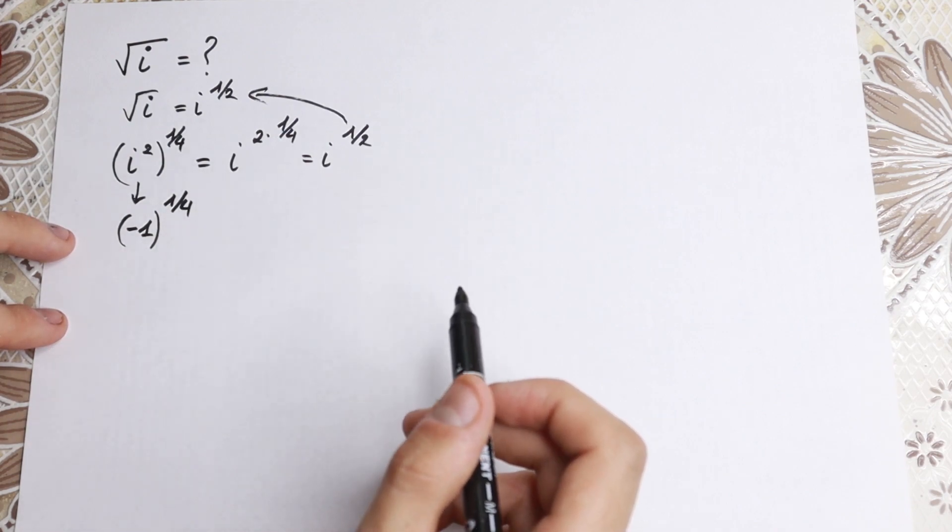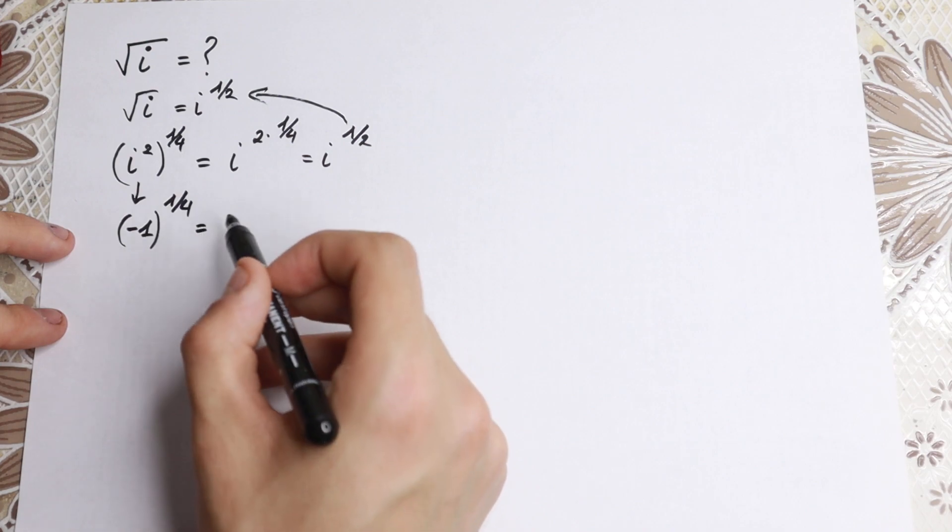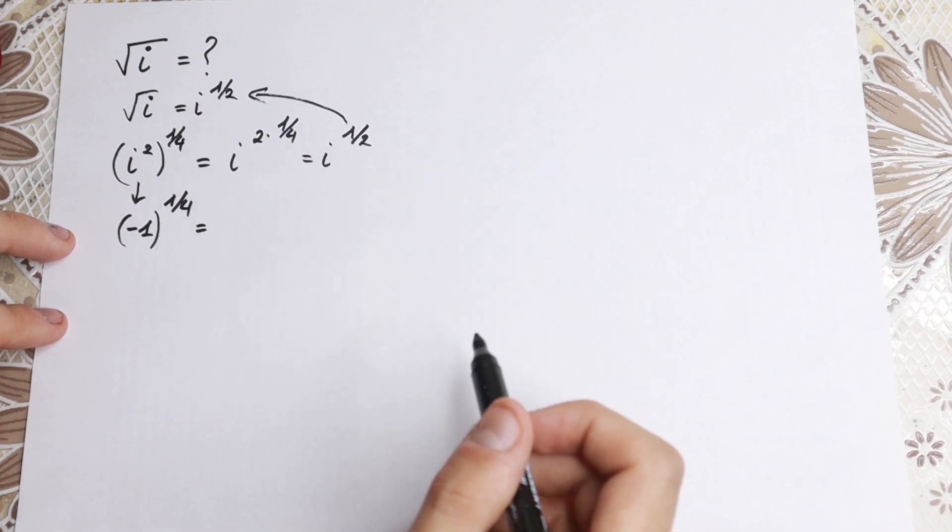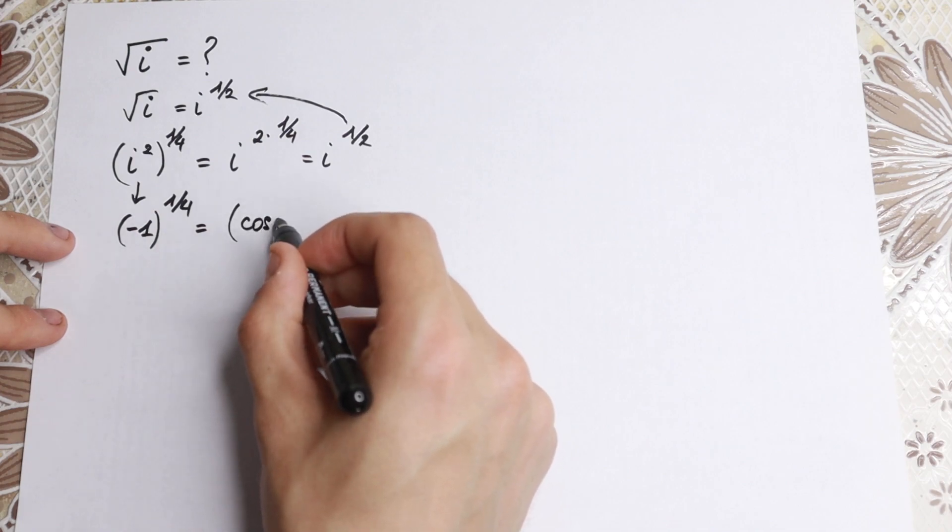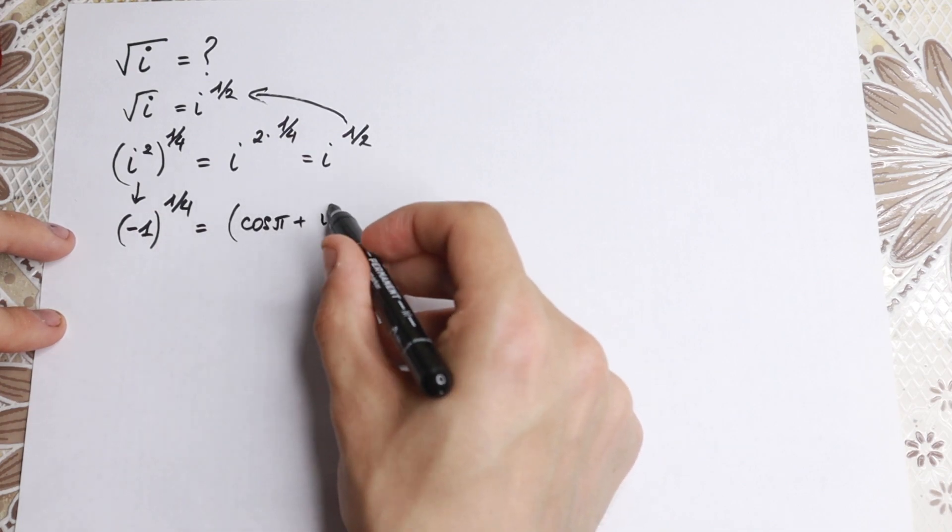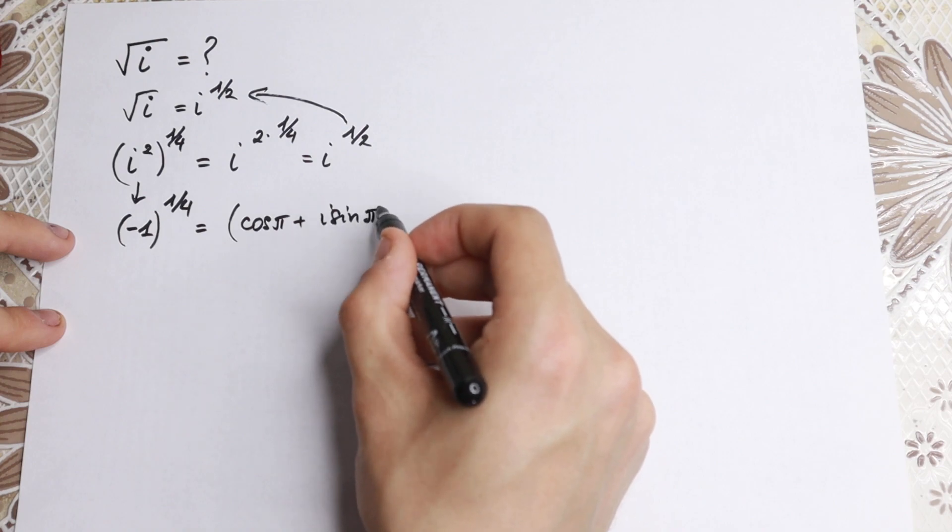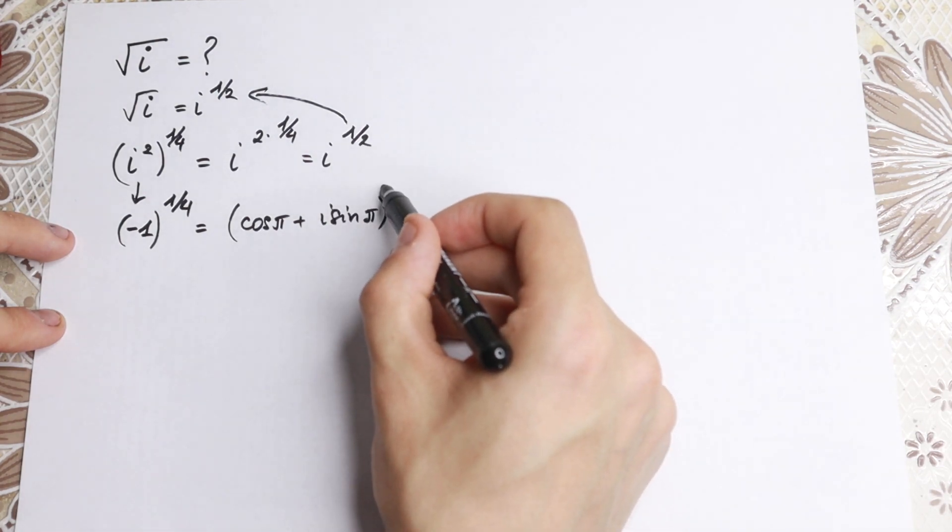And I want to show you a really good way to write this. If you know a little bit about higher mathematics, we can write this as cosine π plus i times sine π, to the power of one-fourth.